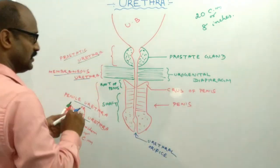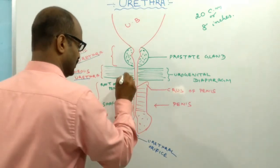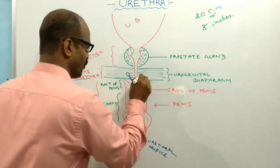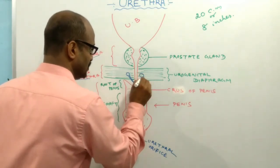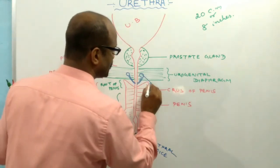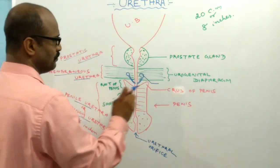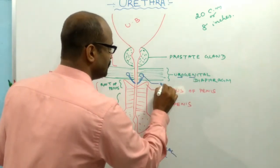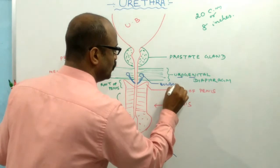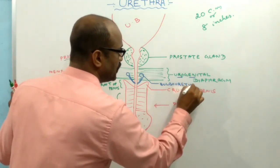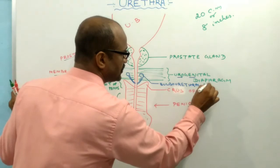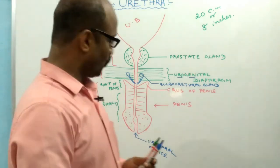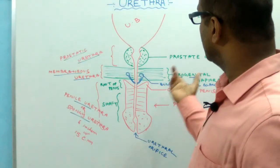In the urogenital diaphragm, there is a male reproductive gland known as the bulbo-urethral gland. The bulbo-urethral gland is actually present at the region of the urogenital diaphragm. This covers the total position, location, and all about the urethra.